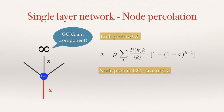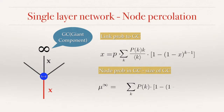With the proper definition of x, we can write down the probability of finding a random node in the giant cluster. Equivalently, this is the relative size of the giant cluster compared to the whole network. Let's define this as mu-infinity. That equals the probability of finding a node with degree k, multiplied by the probability that at least one of its k links leads to the giant cluster, and finally multiplied by p — the probability that the node really exists after the initial attack.